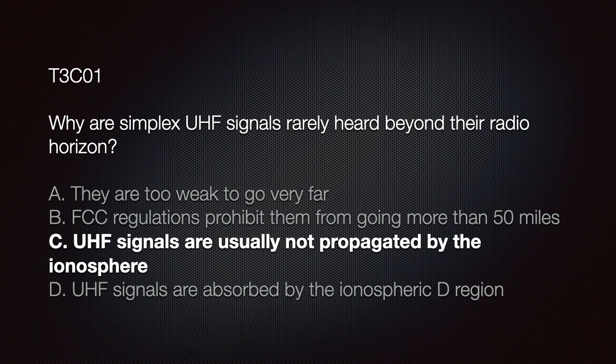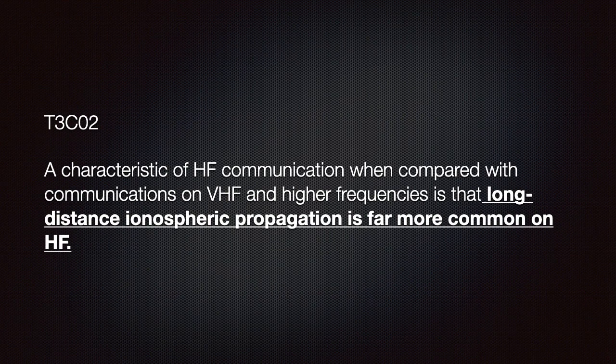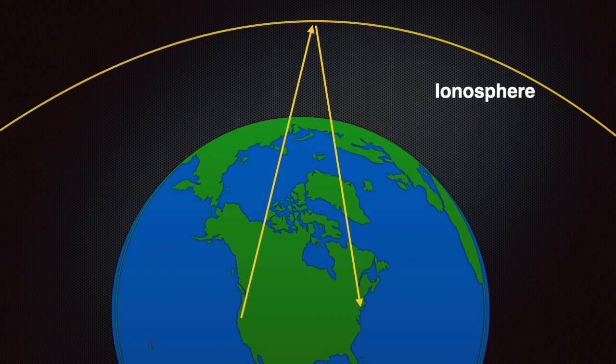We should know that a characteristic of HF communication when compared to communications on VHF and higher frequencies is that long-distance ionospheric propagation is far more common on HF. HF waves bounce off the ionosphere and reflect downward. This slide illustrates a wave being propagated from the west coast via the ionosphere to the east coast.